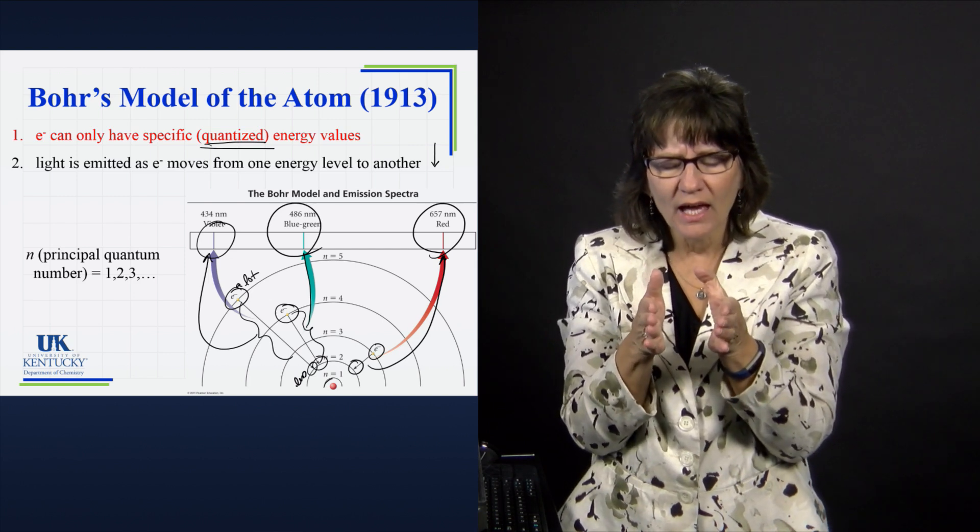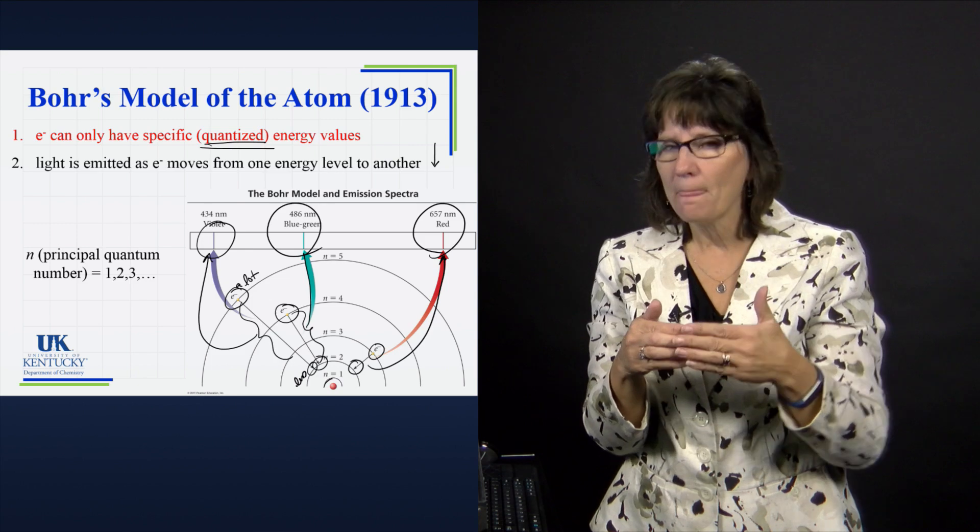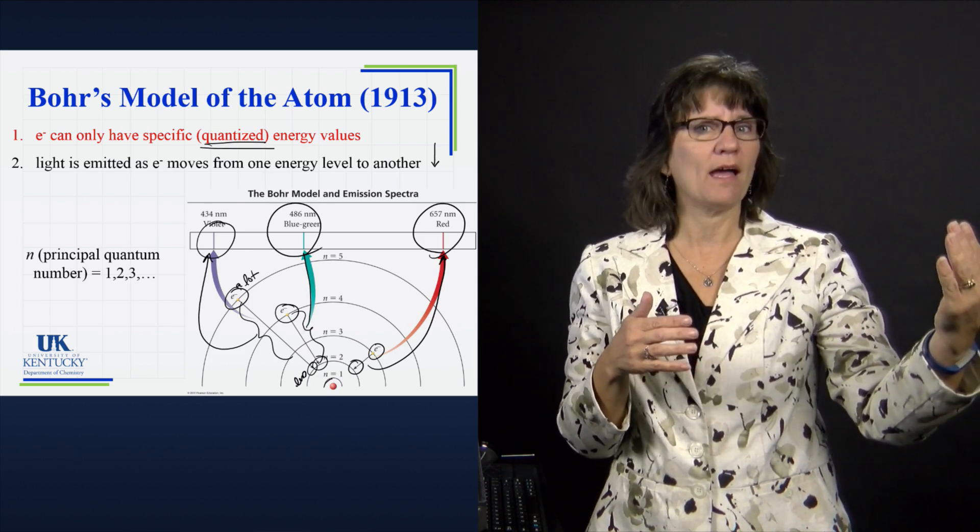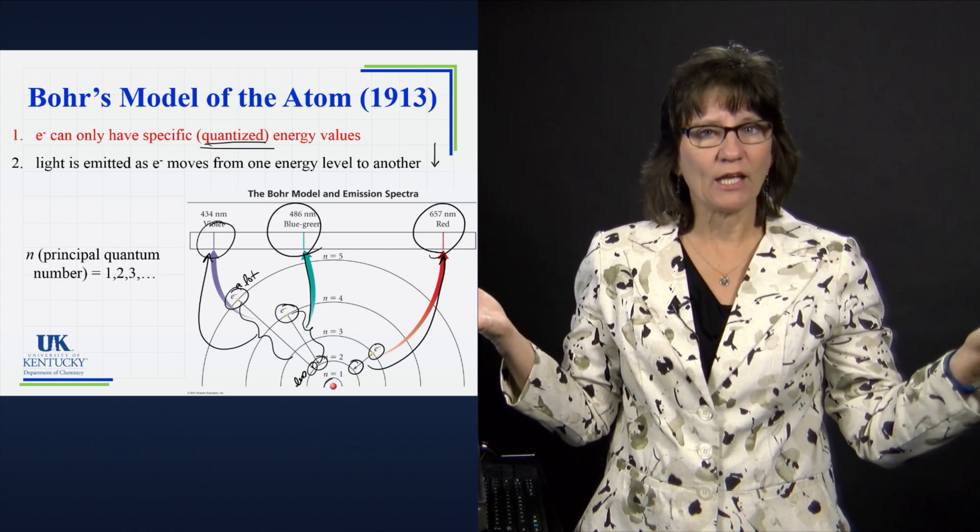So we're starting to see a connection between the electronic structure of an atom and the evidence of it by visible light or outside of the visible region electromagnetic radiation.